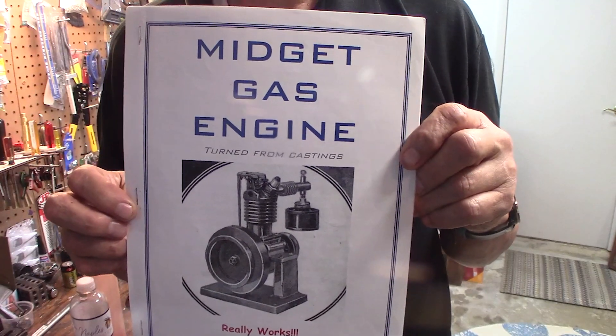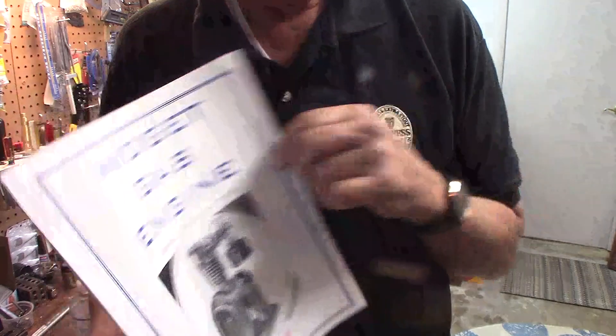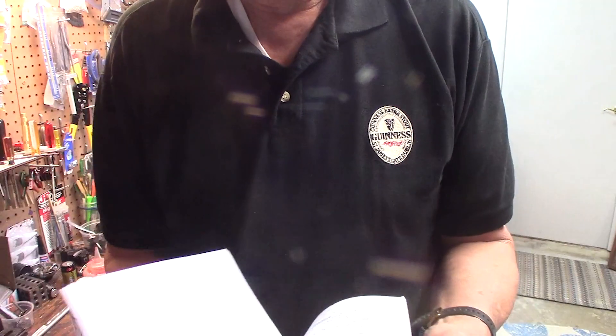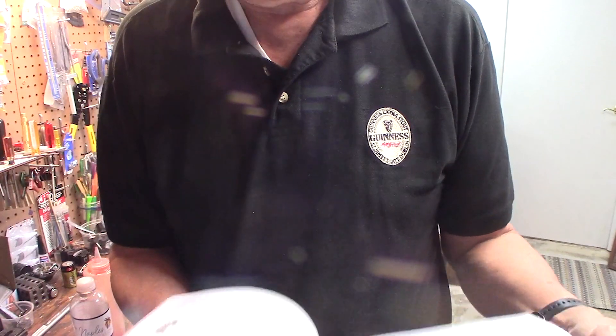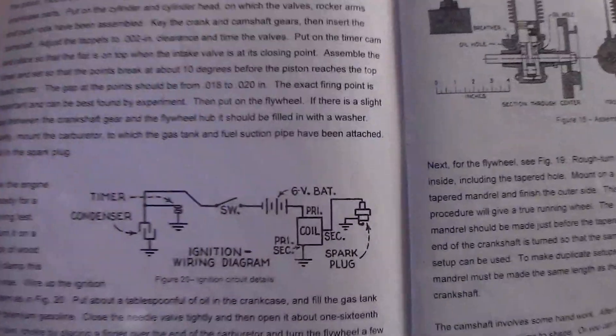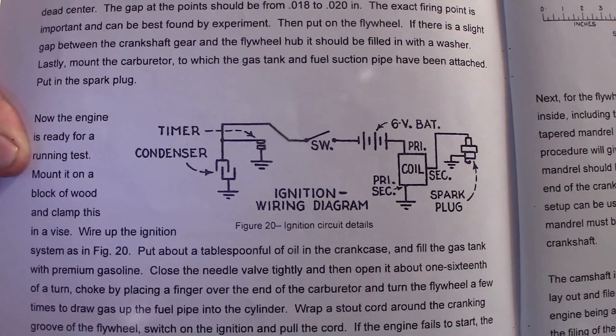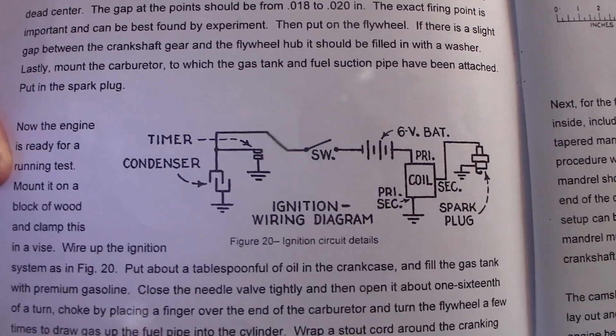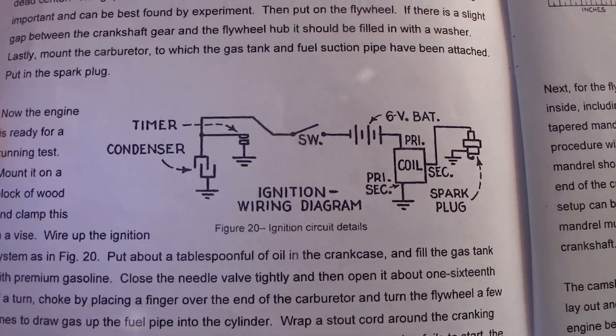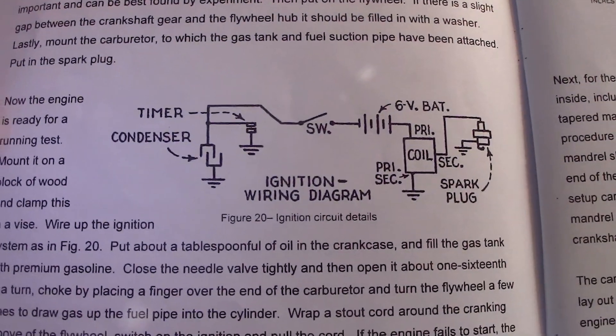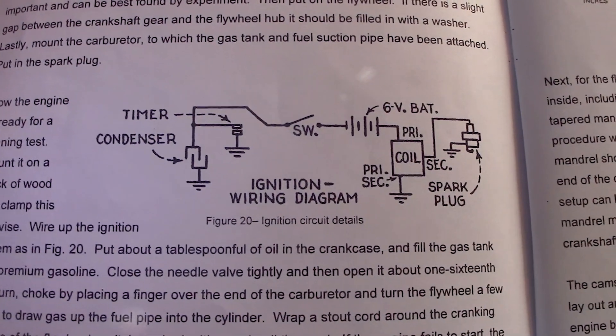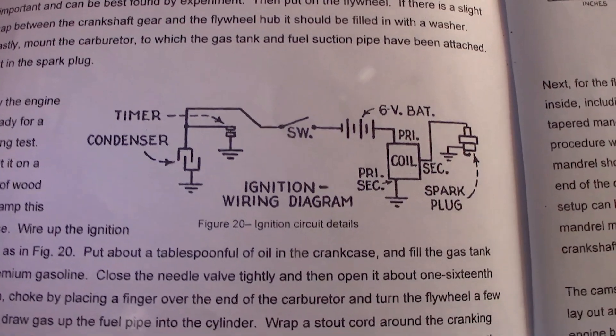I think it's October November issues, 1936 Popular Mechanics. This has a diagram on wiring up your engine. And you can see in this one he has a switch. This author uses a switch. I'm just using an alligator clip that I hooked to the wire.